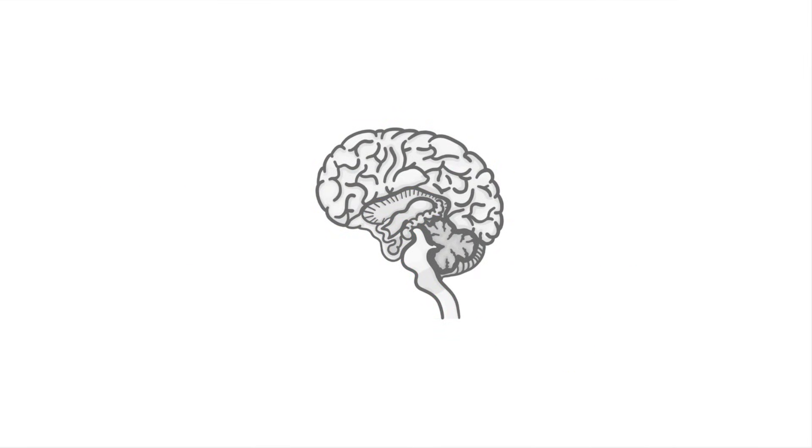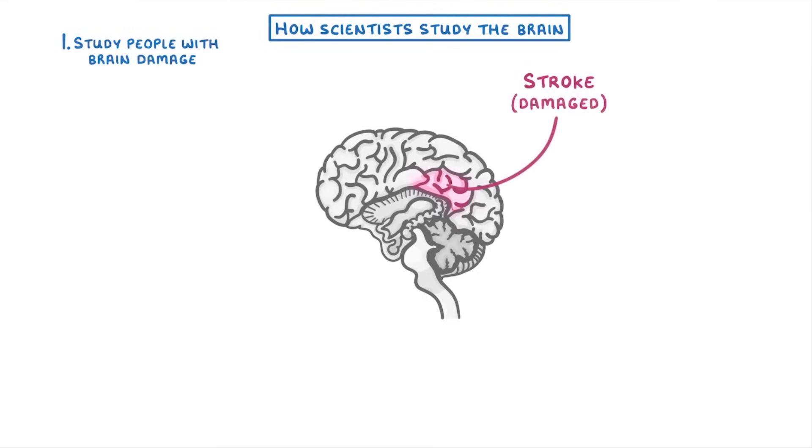The next thing we need to look at is how scientists study the brain to learn which parts do what. One way of doing this is to study people with brain damage. For example, if somebody has a stroke in which one tiny part of their brain is damaged and it leads to them not being able to hear anymore, then we can make a pretty good guess that that region was responsible for hearing in some way.